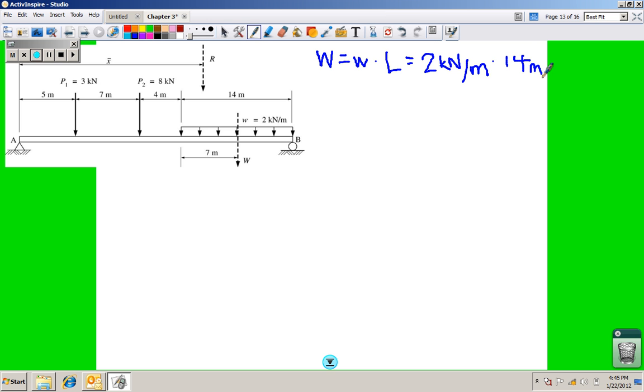On a good day, two times 14 is 28. Not meters, that's kilonewtons. So that becomes 28 kilonewtons, and you see that that is located at the center of the 14 meters, seven meters in.